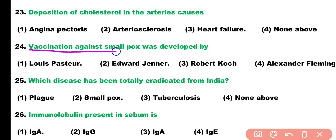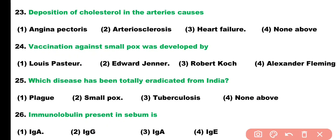Question number twenty-four: vaccination against smallpox was developed by: Louis Pasteur, Edward Jenner, Robert Koch, or Alexander Fleming. Correct answer is option two — vaccination against smallpox was developed by Edward Jenner.